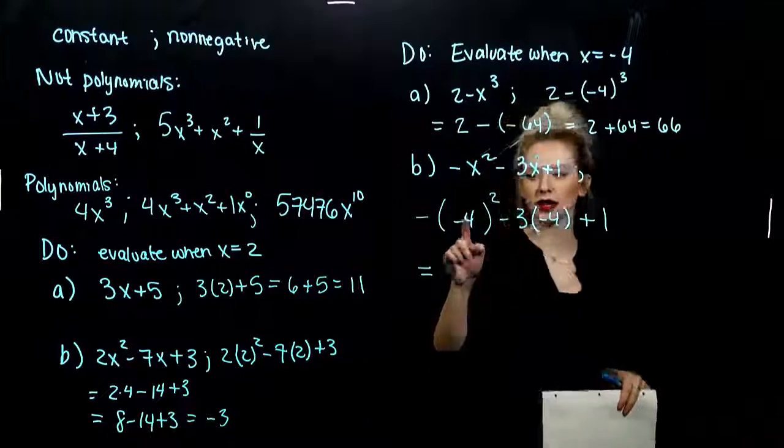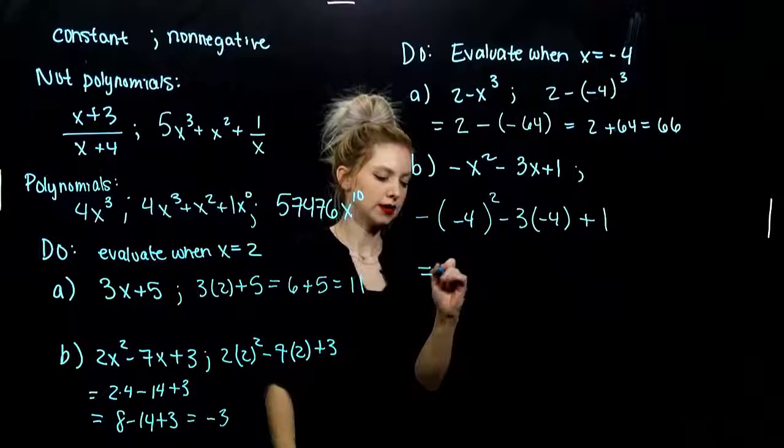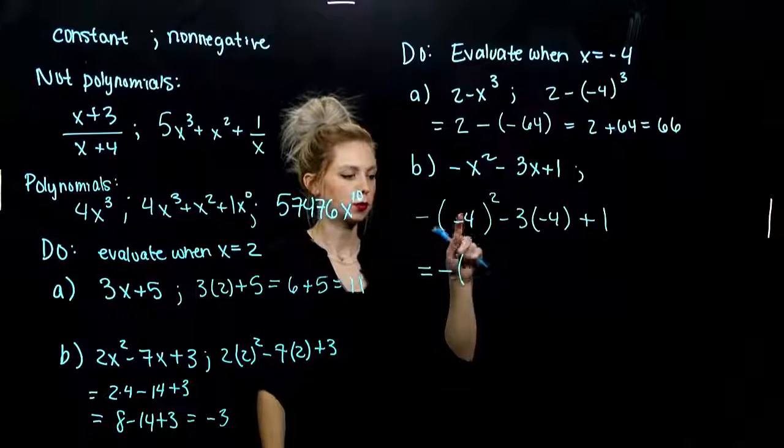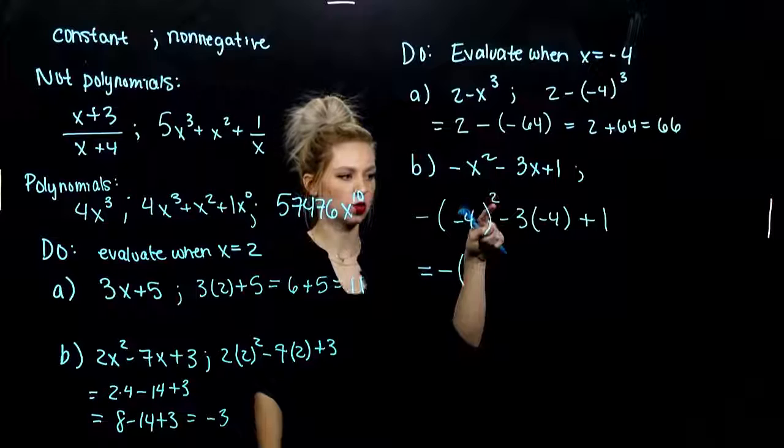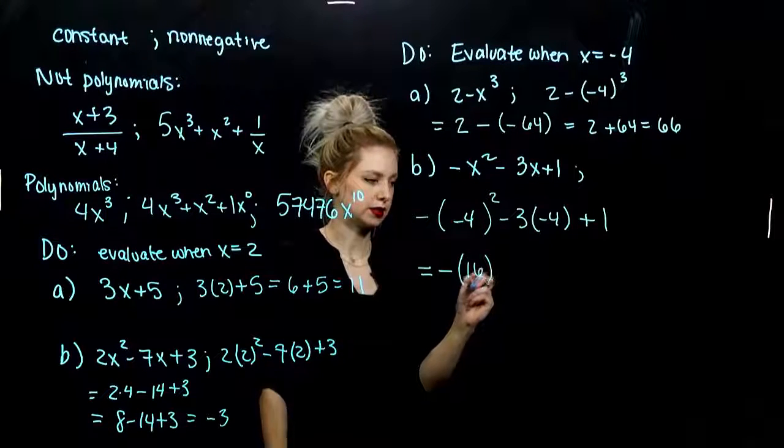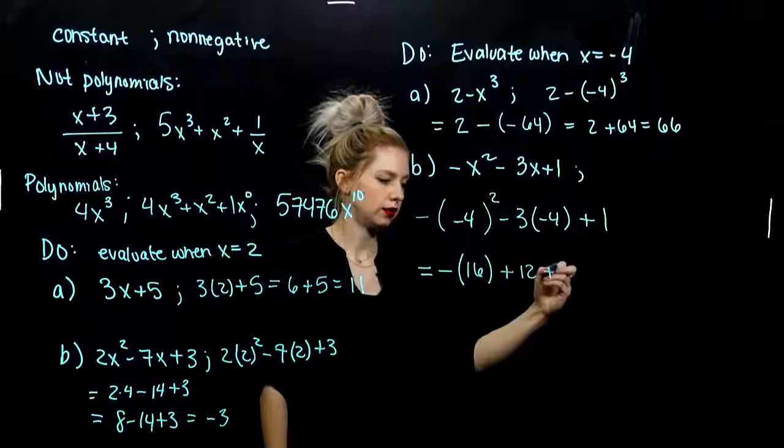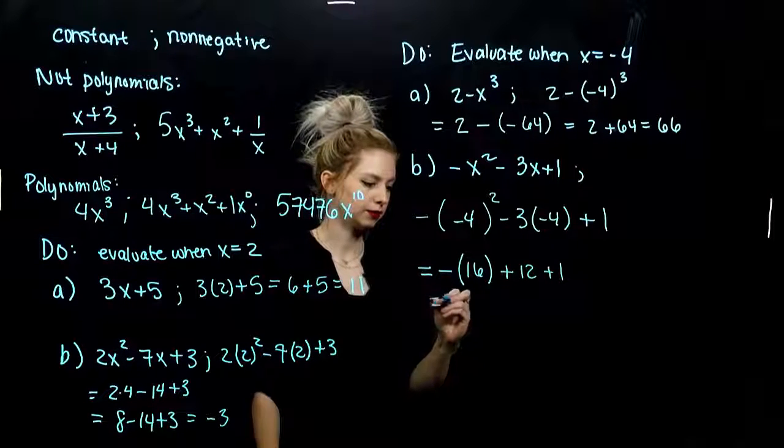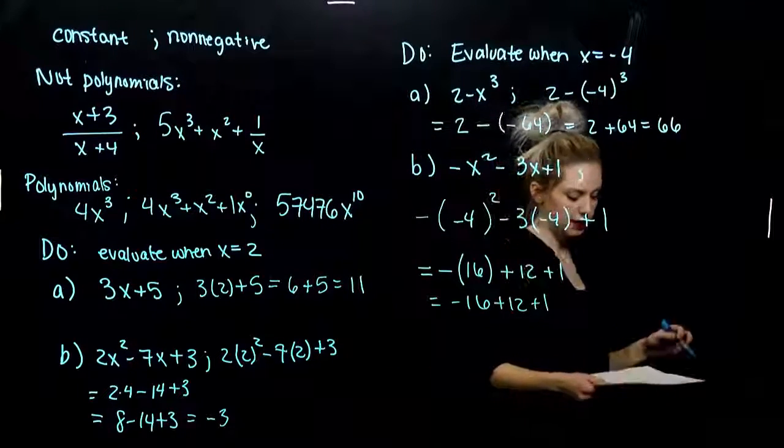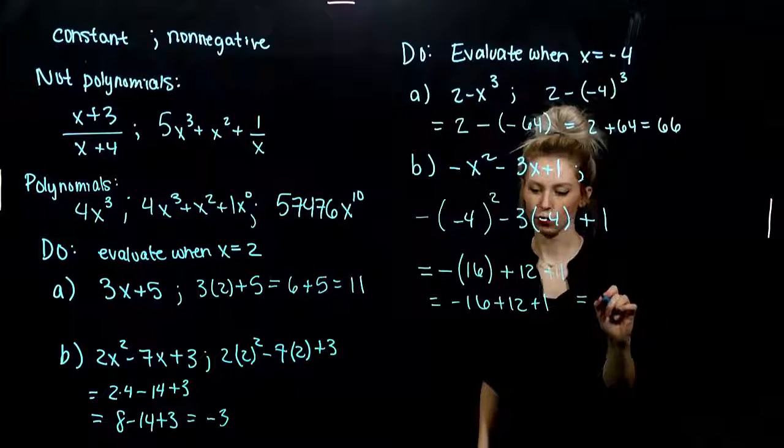We've already evaluated negative 4 cubed. We're looking at squared. It's going to make a difference. I've got a negative on the outside. I haven't taken care of that yet, so it still needs to stand. But, what is negative 4 squared? Negative 4 times itself, it's going to be 16, positive. And, I've got negative times negative will give me positive 12 and 1. So, I've got negative 16, I'm adding 12 and 1. So, negative 16, adding 13. I get negative 3.